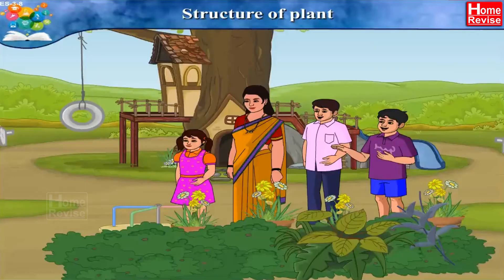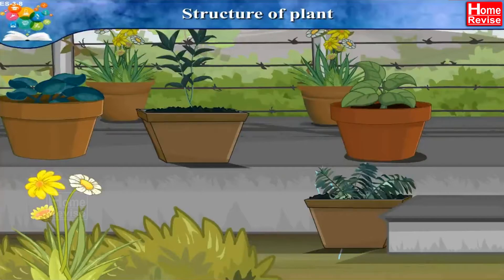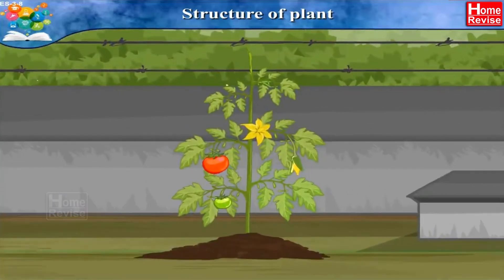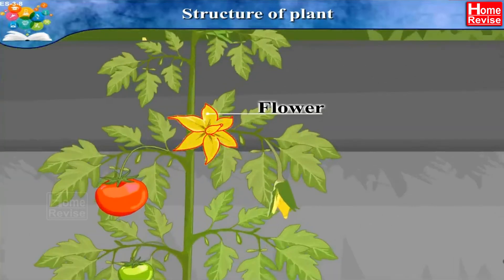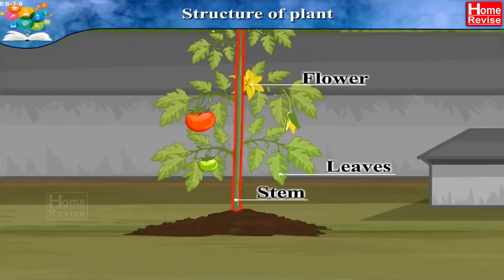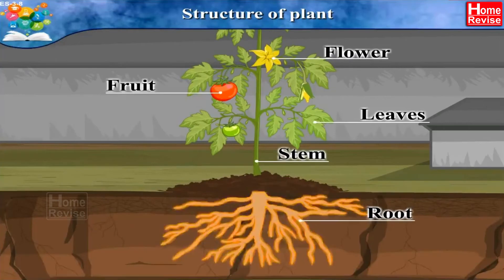Let's visit a garden today. Observe the different plants there — you can see different varieties and colorful plants, as well as various vegetables and fruit plants. Look at this tomato plant: this is the flower, these are the leaves, this is the stem, and the tomato is the fruit of the plant. And yes, the roots are here, beneath the soil.